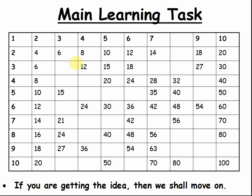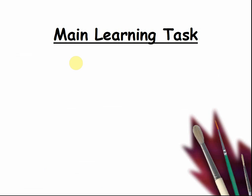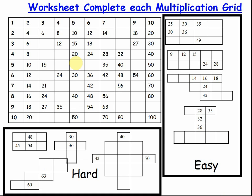If you are getting the idea then we shall move on. What is 30 divided by 6? That's right, it is 5. What is 42 divided by 6? You are awesome — it is 7. Here's the main learning task: now complete the worksheet. Pause the video if you wish and complete the task. There's a main task, a simpler task and a harder task for you to try.